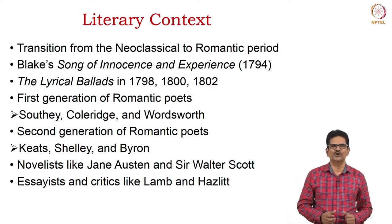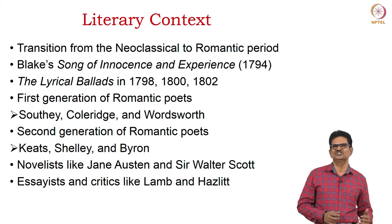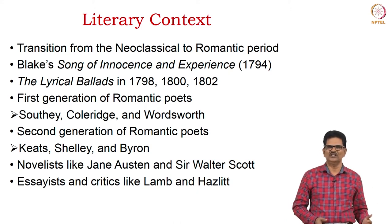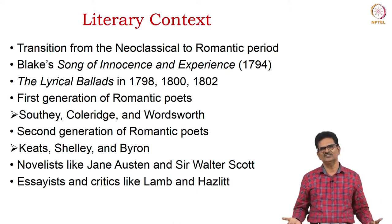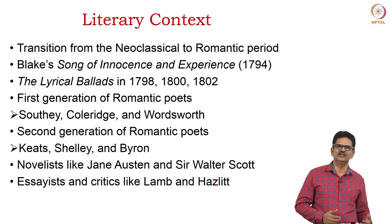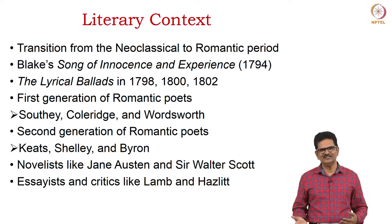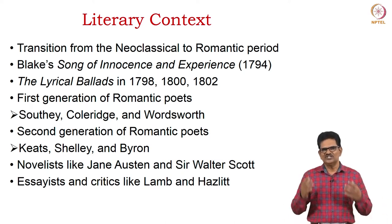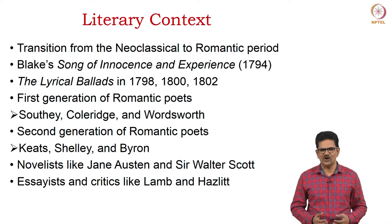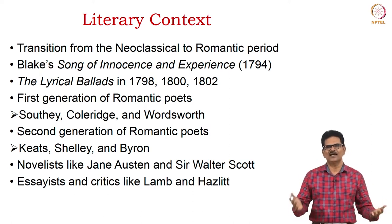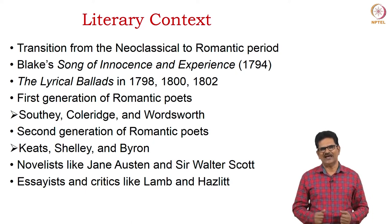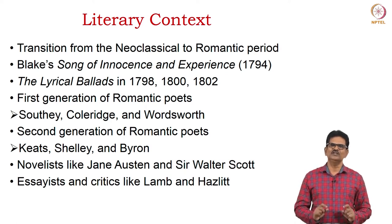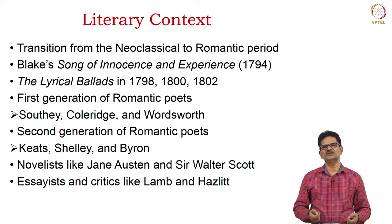We have two kinds of poets. The First Generation of Romantic Poets is represented by Robert Southey, Samuel Taylor Coleridge, and William Wordsworth. The Second Generation of Romantic Poets is represented by John Keats, Percy Bysshe Shelley, and Lord Byron. We also have other writers like novelists Jane Austen and Sir Walter Scott, and essayists like Charles Lamb and William Hazlitt, who contributed to the Romantic movement. However, we will look into the Romantic poetic movement alone.